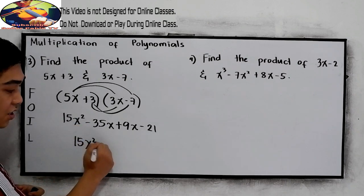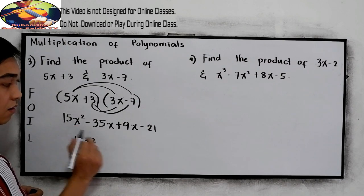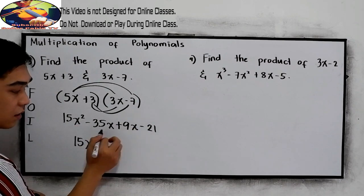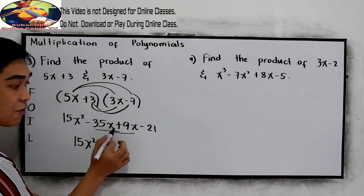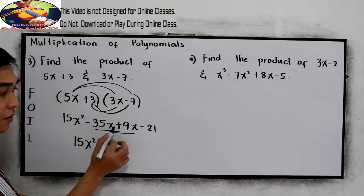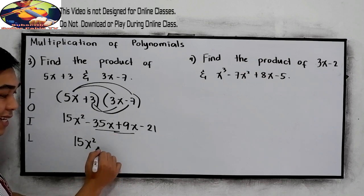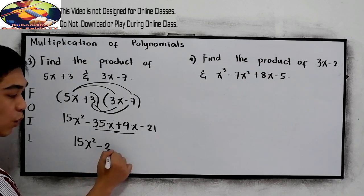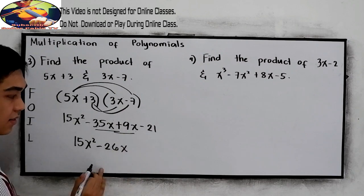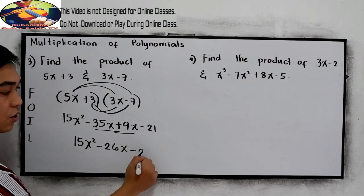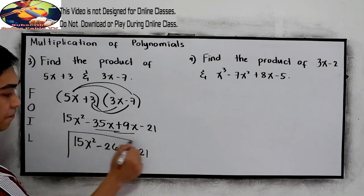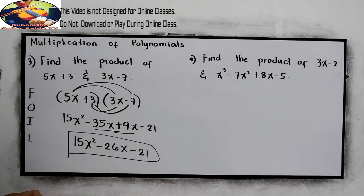So 15x squared, just copy. Then we can combine our middle terms, because they have the same exponent and variable. So negative 35 plus 9, that is negative 26x. And just copy the constant, negative 21. So this will be our final answer.